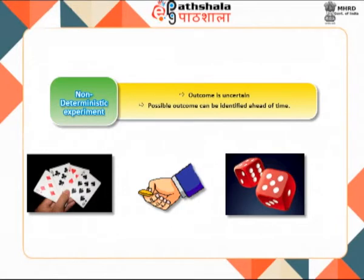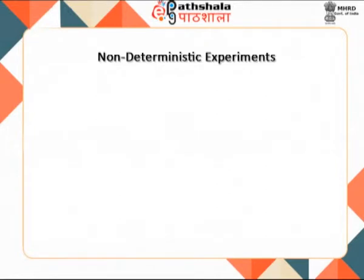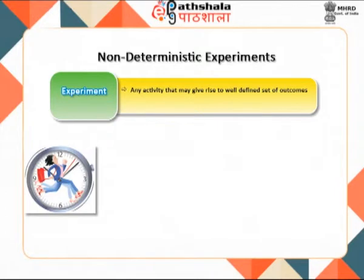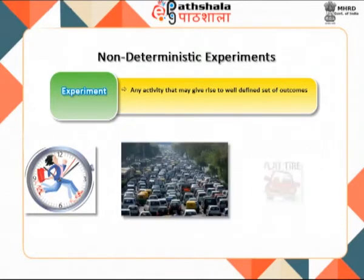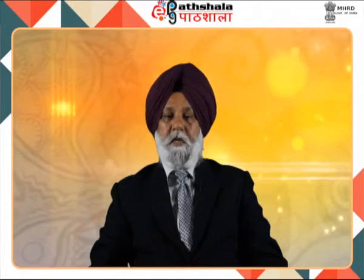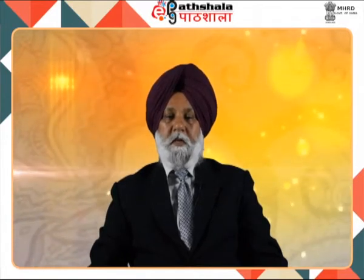It is known that the possible outcomes are heads or tails, but which of them appears in the toss is unpredictable in advance. Any activity or procedure from our daily life — or even hypothetical — that may give rise to a well-defined set of outcomes is called an experiment. The time taken to reach college daily is non-deterministic because of unknown factors like traffic, a flat tire, or starting up late in the morning. Therefore, if this time is noted for a week, you will find a lot of variation in the data because of the uncertainty involved.